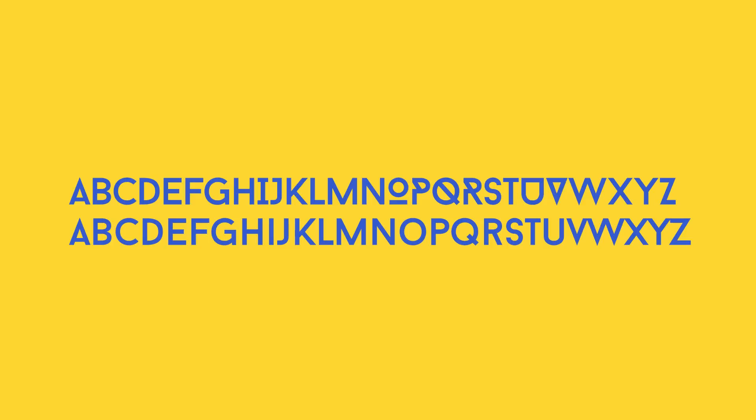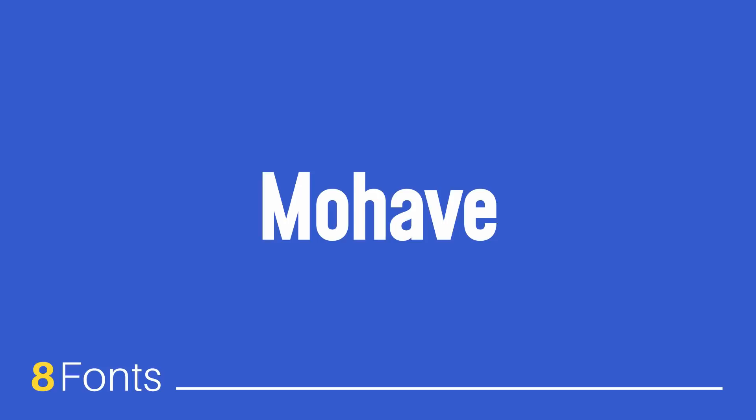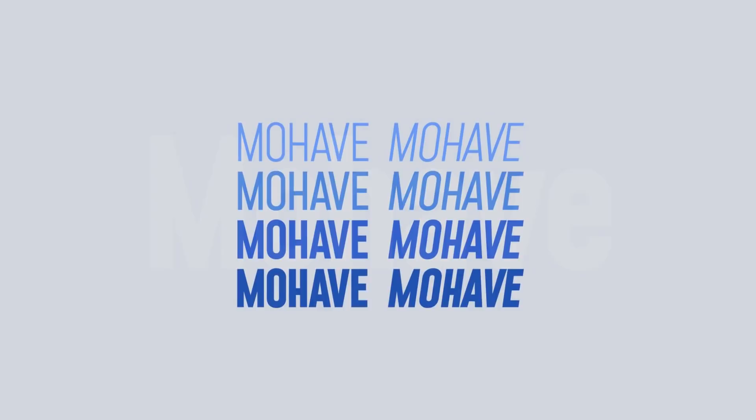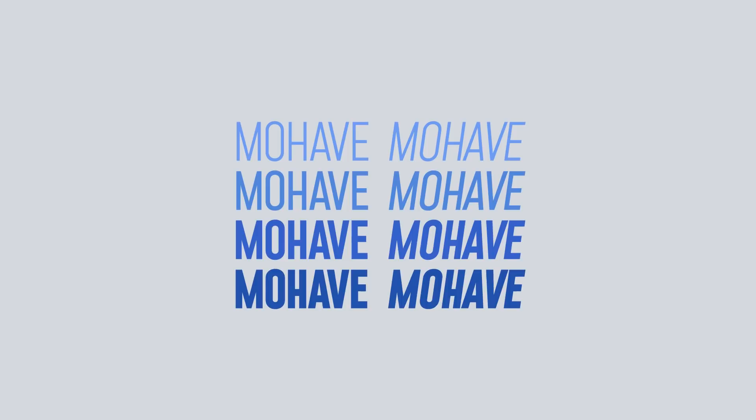We're going to follow that up with a narrow tool sans-serif typeface called Mohav, which you can have in eight different fonts — four distinct font weights with an italic version of each weight. When I saw Mohav I knew I had to share it. One thing I'm particularly fond of is how the numerical values look.